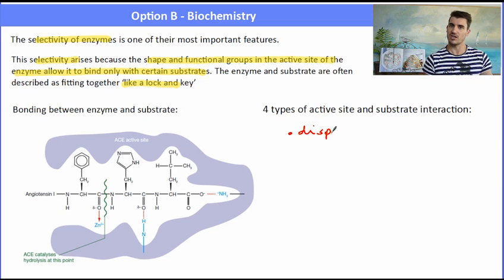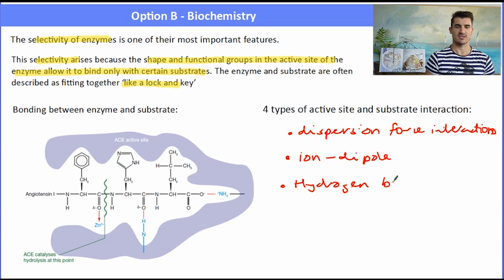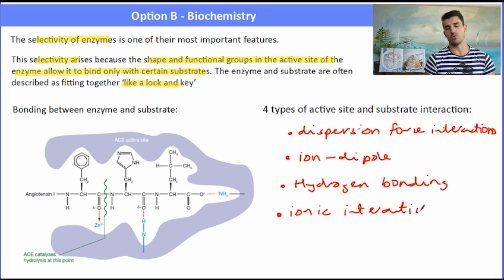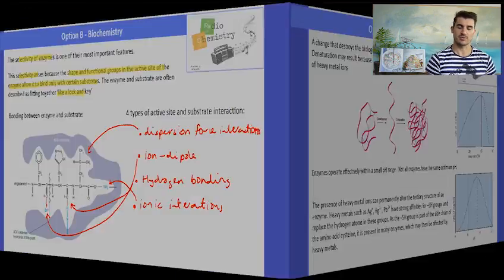The four types of interactions that an enzyme and substrate can have are dispersion force interactions, where we have non-polar groups interacting with each other. We could have ionic interactions between two positively charged ions. We could have ion-dipole interactions between an ion and then a carboxyl group, for instance, which has a dipole. And we could have some hydrogen bonding interactions between the substrate and the enzyme. If we have a look at that diagram on the left hand side, we can see all of those different types of interactions. Here we have the dispersion force interactions, the ion-dipole interactions, the hydrogen bond interactions, and the ionic interactions all helping the shape of this enzyme react with that specific substrate.